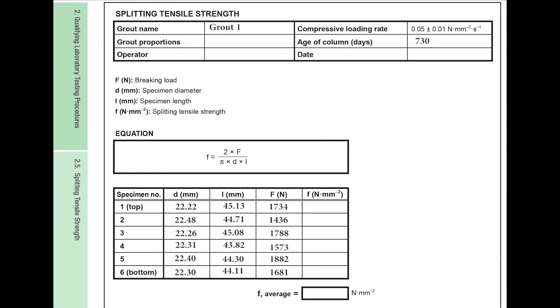Calculate the splitting tensile strength, F, in newtons per square millimeter using the following relationship, where F is the breaking load in newtons, D is the specimen diameter, and L is the specimen length, both in millimeters. Finally, calculate the average splitting tensile strength using the results of six specimens obtained for each grout.